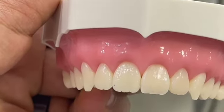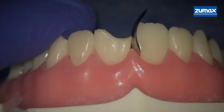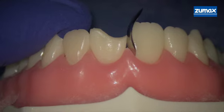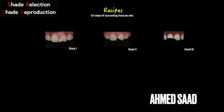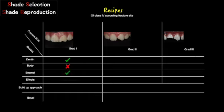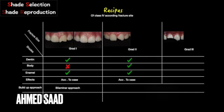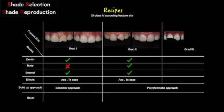As you can see, this is a grade 2 fracture according to my own classification for class 4. I classify class 4 into 3 grades according to the fracture site: grade 1, grade 2, and grade 3. That helped me in opacity choice, moreover bevel design.